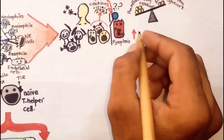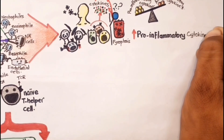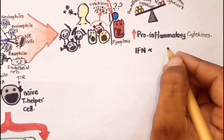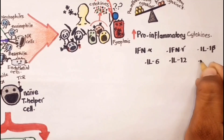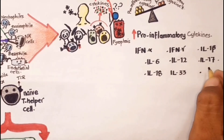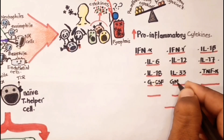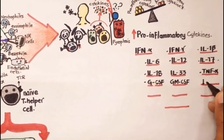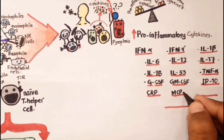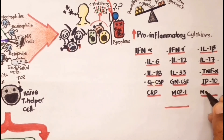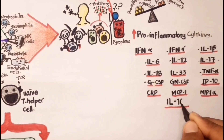Most patients with severe COVID-19 exhibit markedly increased serum levels of pro-inflammatory cytokines and chemokines, including interferon-alpha, interferon-gamma, IL-1 beta, IL-6, IL-12, IL-17, IL-18, IL-33, TNF-alpha, GCSF, GMCSF, IP10, C-reactive protein, MCP-1, and MIP-1-alpha, as well as the anti-inflammatory cytokine IL-10.